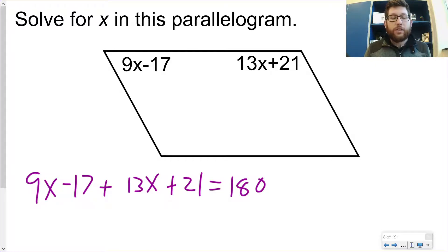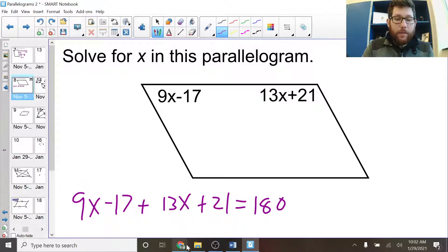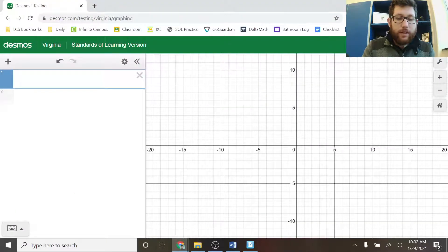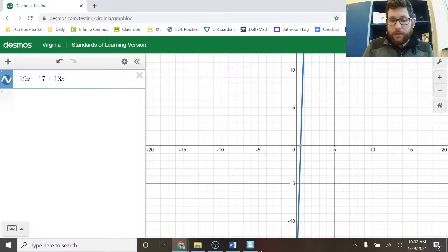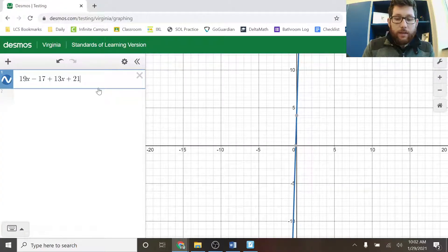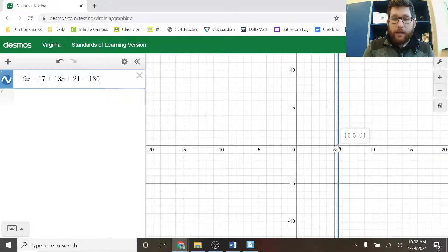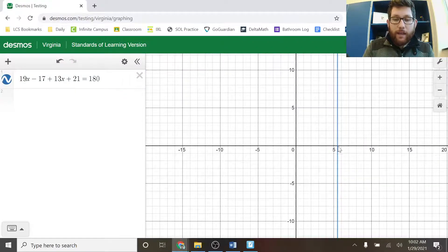Notice, I didn't set them equal to each other. Instead, I added them to equal 180 because that's what I know. I know they add up to equal 180. So that's exactly what I did. I put a plus sign in between them, but an equal sign equals 180. Once again, I could take this and I could use this in Desmos. So let's do 9x minus 17 plus 13x plus 21 is equal to 180. If you don't have the equals to, it's not going to make any sense. So if I add them up, set them equal to 180, notice I get a decimal of 5.5. And that would be our correct answer.